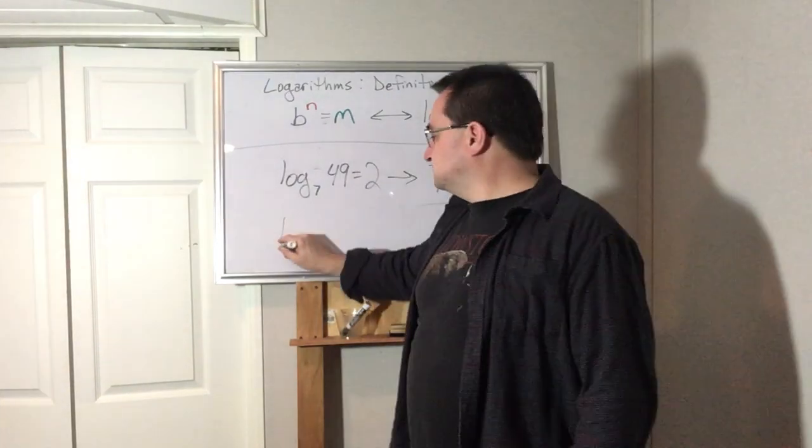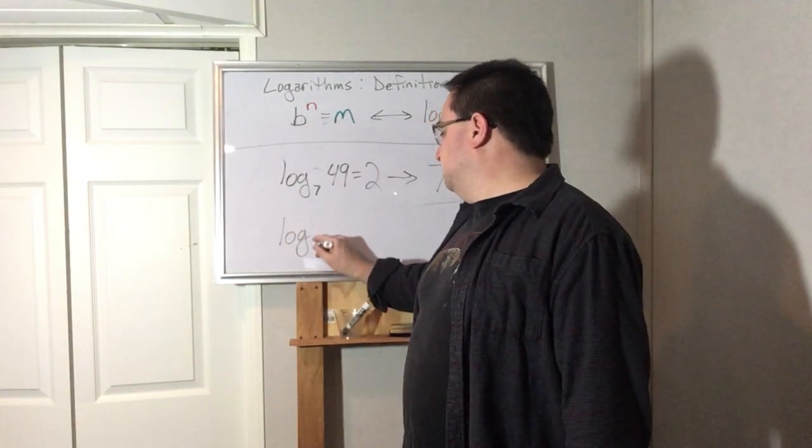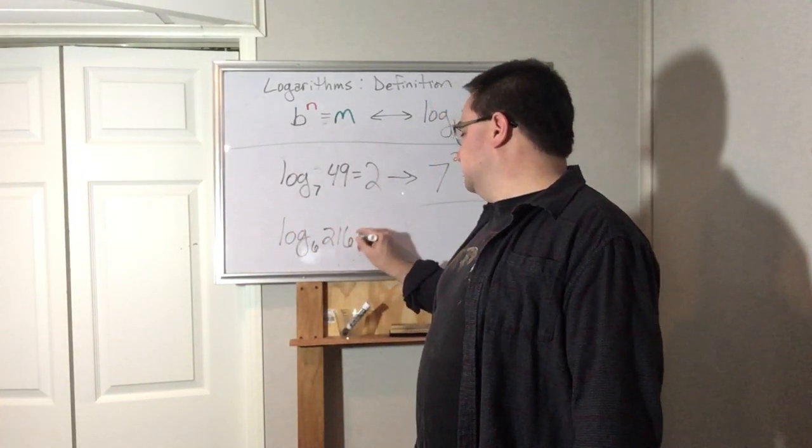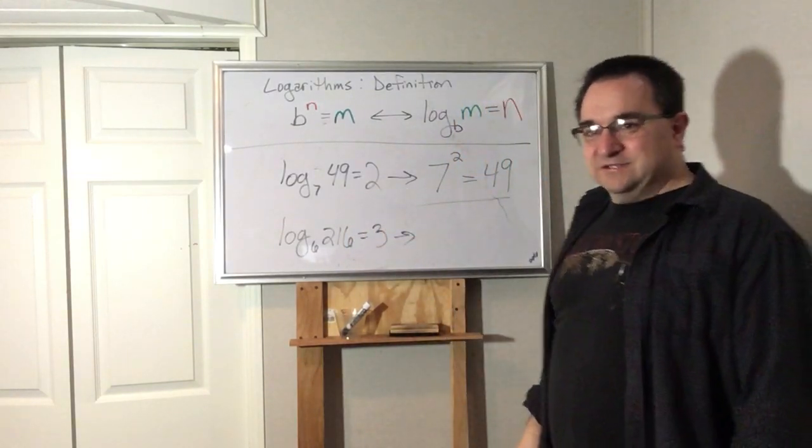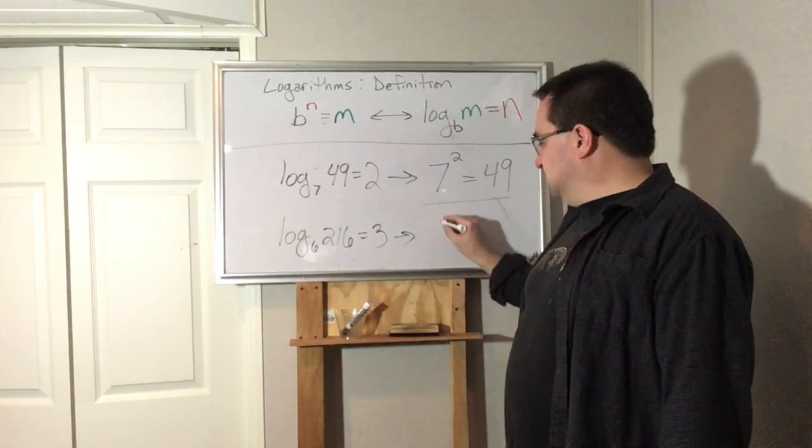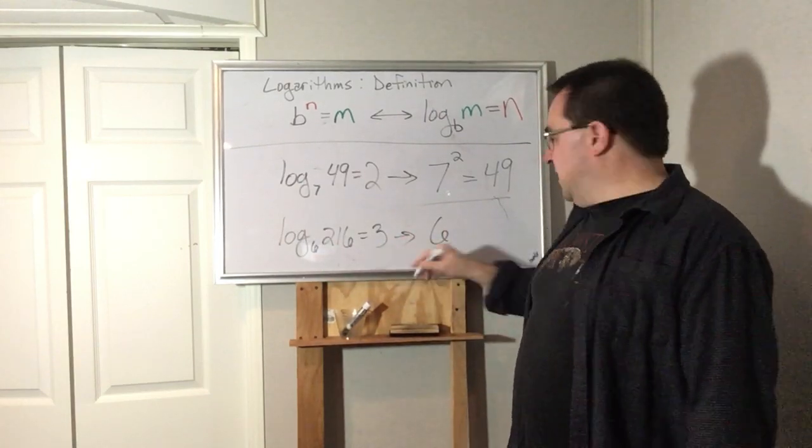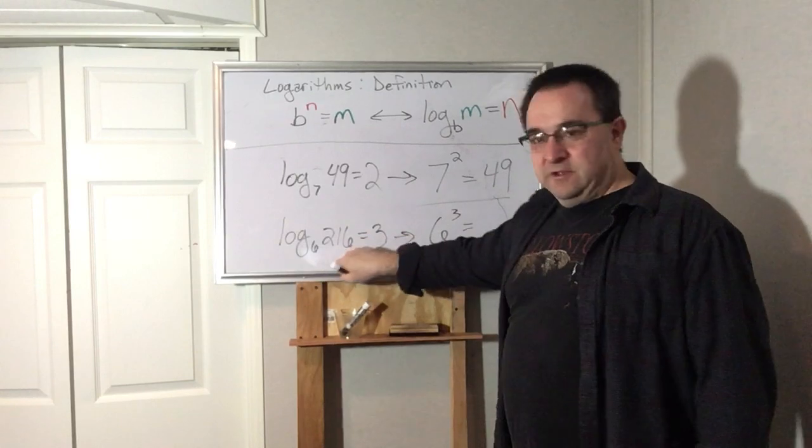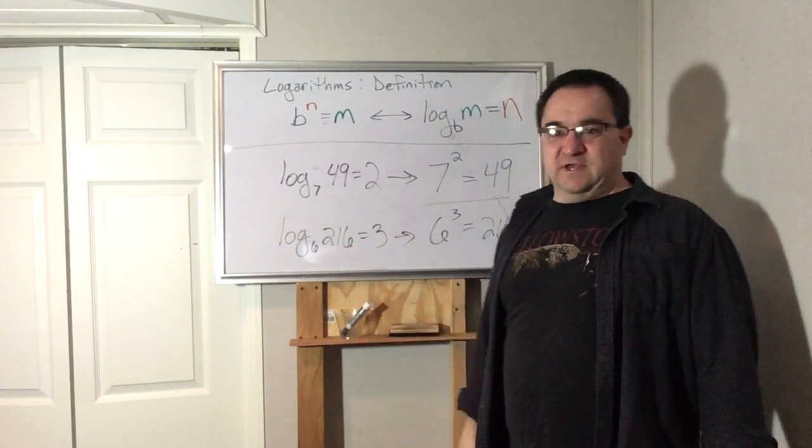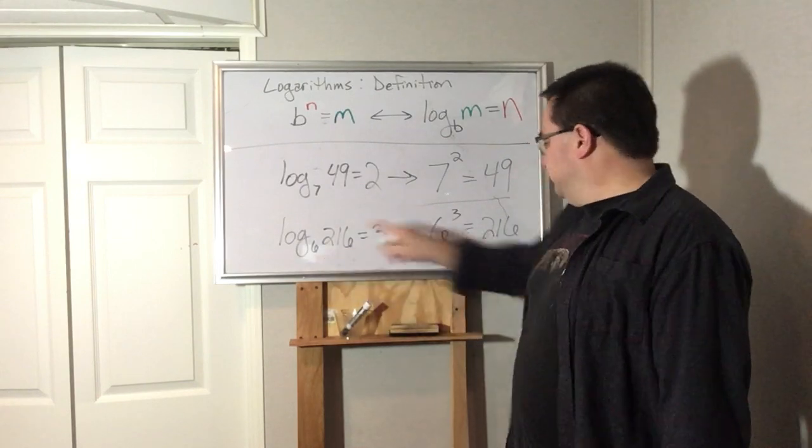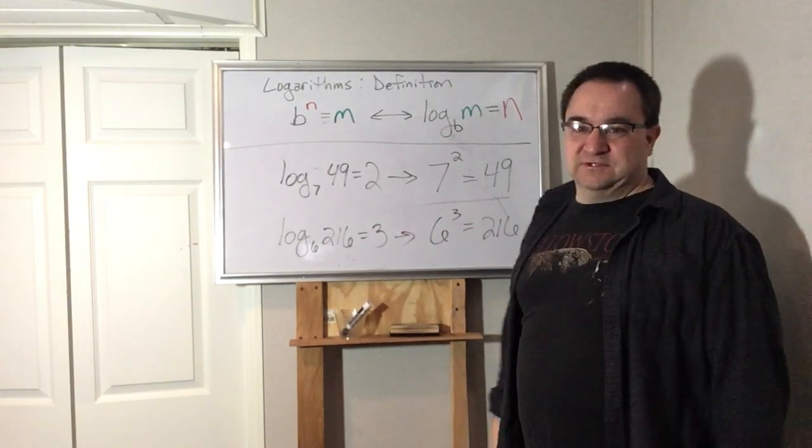Let's do one more of these. Log base 6 of 216 equals 3. What does that look like in exponential form? That's the base. That's the power. That's what it equals. See, if you do enough of these, that's what it feels like. You just got to get the pattern. That's the base, that's the power, that's the answer.